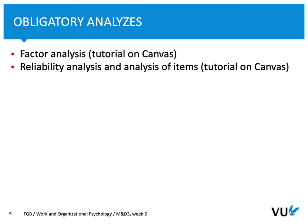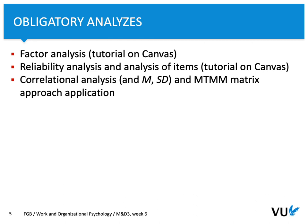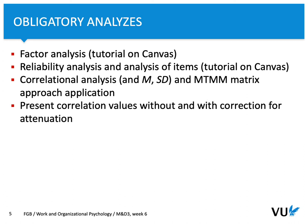The next step after factor analysis is reliability analysis and analysis of items. Again, there is a tutorial on Canvas — see it to learn more about reliability and item analysis. The next required analysis is correlation analysis. You need to calculate correlations, the R_wg coefficient, and apply the MTMM matrix approach. These values include mean and standard deviation.